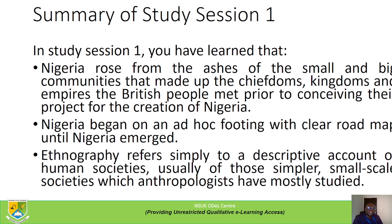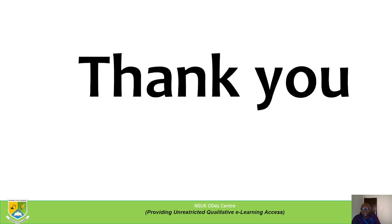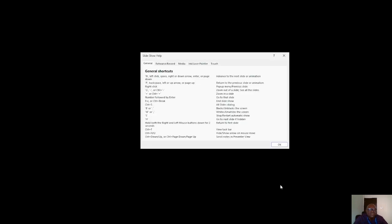Summary of study session one. In study session one, you have learned that: one, Nigeria rose from the ashes of small and big communities that made up the kingdoms and empires the British people met prior to conceiving their project for the creation of Nigeria; two, Nigeria began on an ad hoc footing with clear road maps until Nigeria emerged; and three, ethnography refers simply to a descriptive account of human society, usually those of simpler, small-scale societies which anthropologists have mostly studied. Thank you, and that is the end of our study session one.